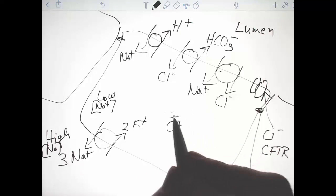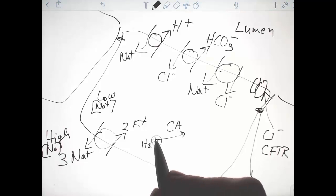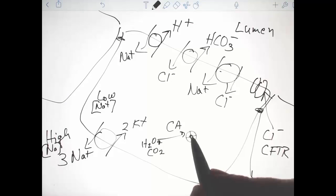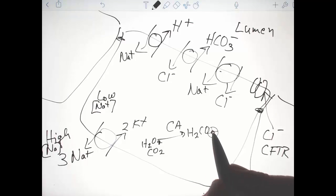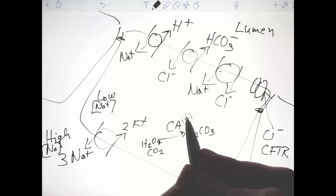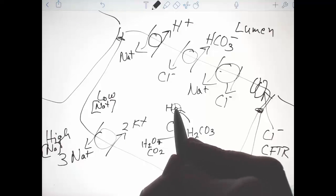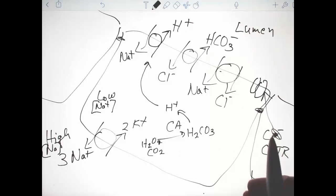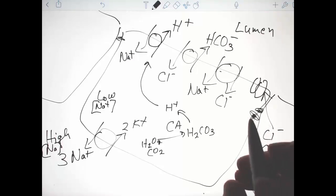The enzyme carbonic anhydrase is converting water and carbon dioxide to H2CO3 carbonic acid. That dissociates, and the H-plus is used in that sodium proton counter exchanger.